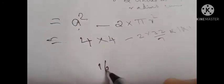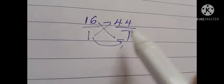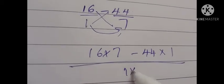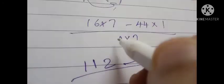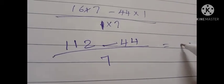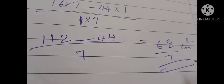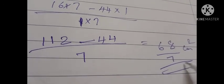Performing cross multiplication: (16 × 7 − 44 × 1) / 7. Now 16 × 7 = 112 and 44 × 1 = 44. So 112 − 44 = 68. Therefore the area of the remaining portion is 68/7 cm². This is the area of the shaded portion.